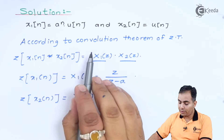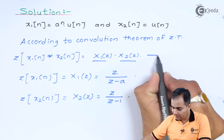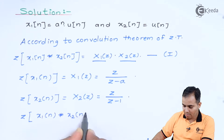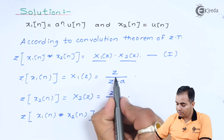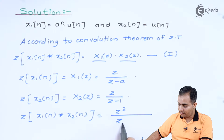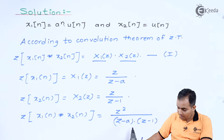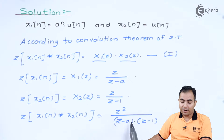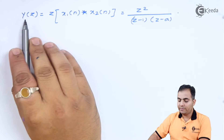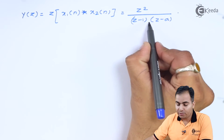Now we are going to find the convolution using Z-transform. We substitute both values to get Y(z) = z² / [(z − a)(z − 1)]. We want to write this in the discrete domain, so we will use the partial fraction method. Y(z) represents the convolution of x1(n) and x2(n).